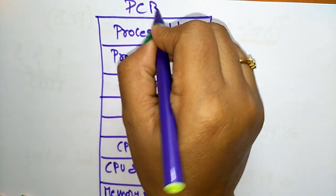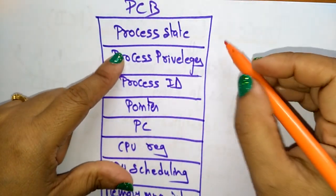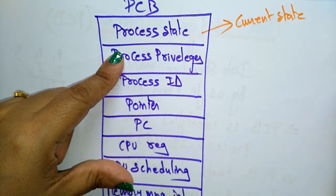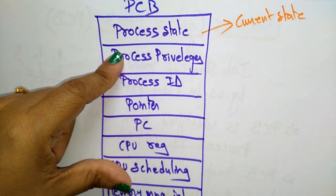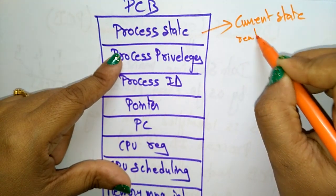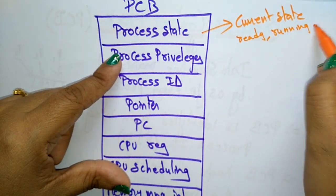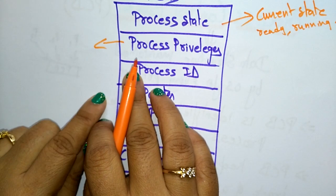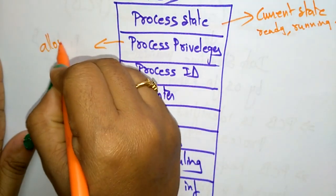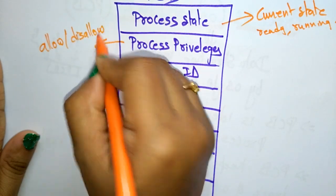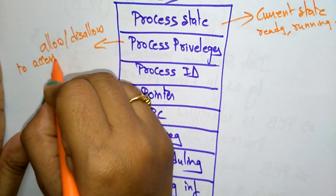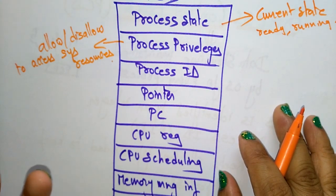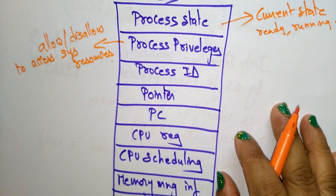These are all the related process information stored in the Process Control Block. The process state indicates the current state of a process — whether it is in running state, ready state, or waiting state. Process privileges means whether to allow or disallow access to system resources. To use system resources, that process has to be given some permissions, and that information is also stored in the PCB.